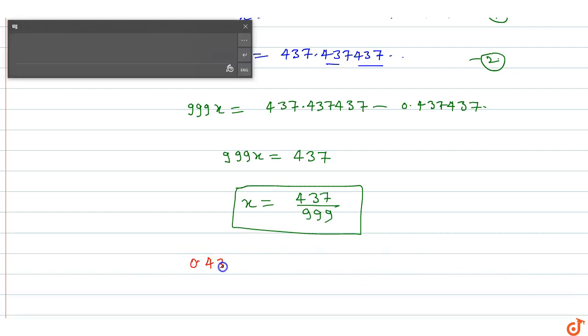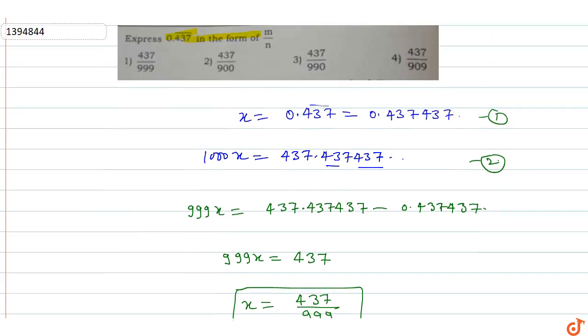0.437 bar in m by n form is 437 by 999. So which option is correct? Option A will be the correct option. This is the answer for this question.